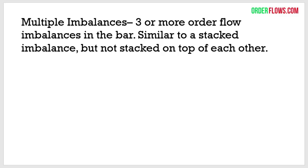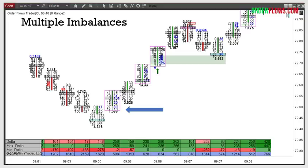Multiple imbalances — it's three or more imbalances in a bar. An imbalance occurs when there are more aggressive buyers than sellers by a ratio of four to one, or more aggressive sellers than buyers also by four to one. Four to one seems to be the industry standard. I stick to 400. Multiple imbalances is similar to a stacked imbalance. A stacked imbalance is when you have three or more imbalances stacked one on top of each other. Multiple imbalances is when there are three or more imbalances in the bar — they're not necessarily stacked on top of each other. And it's very important.